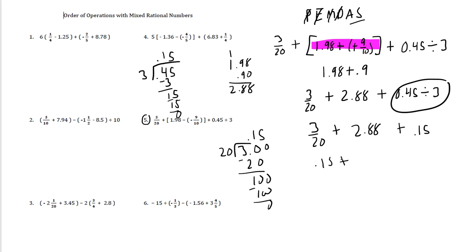So 0.15 plus 2.88 plus 0.15. Because these are all now decimals, we can just line up the decimals and add them all together. 8 plus 5 is 13. 13 plus 5 is 18. And that would be 9, 10, 11. So 3.18.